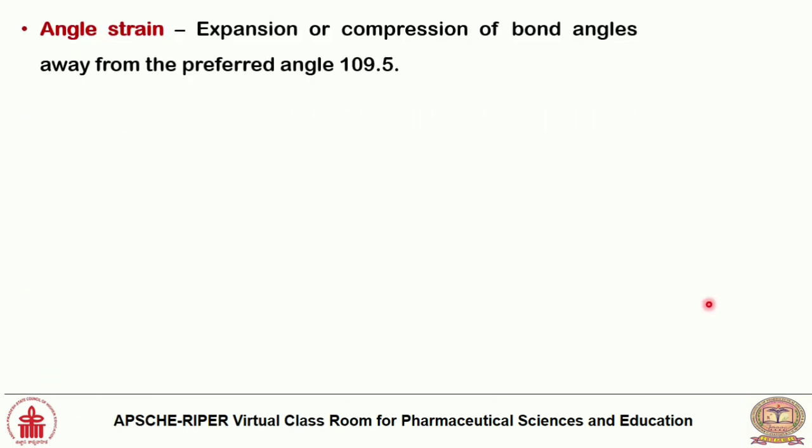Before seeing individual structures and their angles, we should know some definitions. Angle strain is the expansion or compression of bond angles away from the preferred angle of 109.5°. In sp3 hybridization, the typical C–C bond angle should be 109.5°.